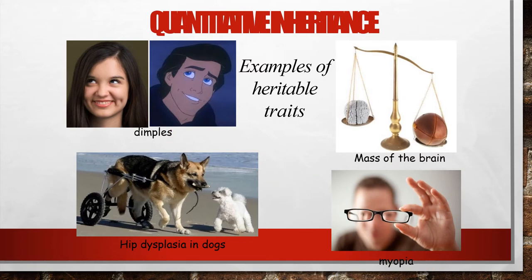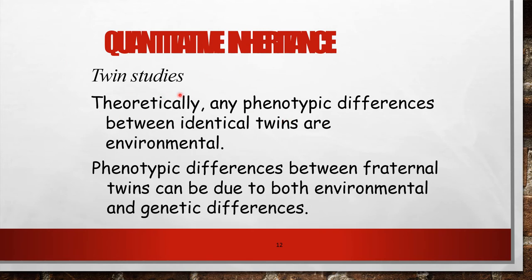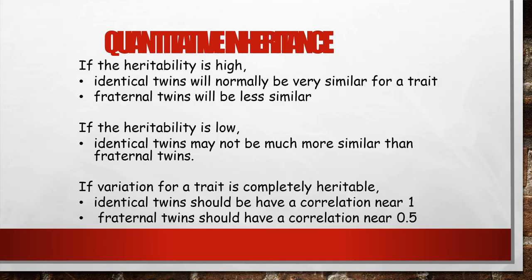Quantitative inheritance can be studied through twin studies. Any phenotypic difference between identical twins is environmental, while differences between fraternal twins can be due to both environmental and genetic factors. If heritability is high, identical twins will be very similar for a trait and fraternal twins less similar. If heritability is low, identical twins may not be much more similar than fraternal twins. If variation is completely heritable, identical twins should have a correlation near 1 and fraternal twins near 0.5.